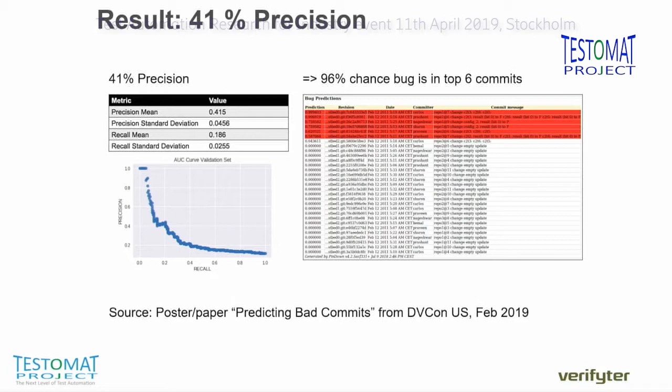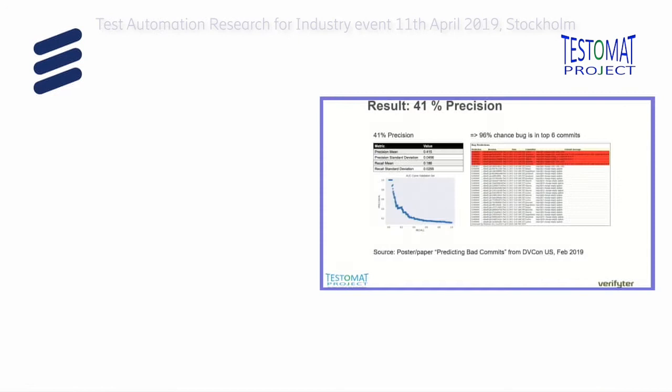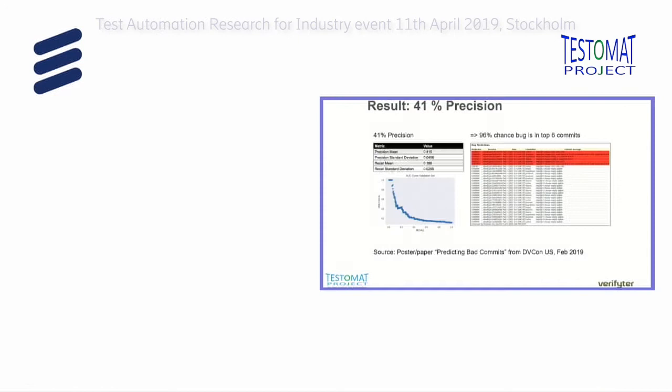Looking at some results: we've been trying to get precision up. It's a difficult problem — it's an imbalanced dataset and there's huge overlap between bug and non-bug commits. With precision around 41% for certain datasets, you can start to use this data, because among the top six high-risk commits we identify, you can be fairly certain — around 96% — that at least one of them contains a bug. So this could really help the industry in the future. Please swing by and listen to me — I'm done for now.